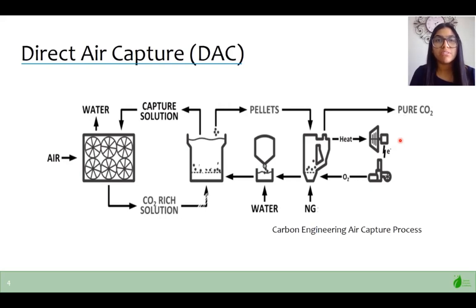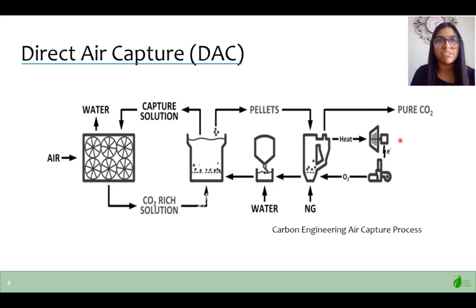This process is performed using the sorbent potassium hydroxide to perform a neutralization acid-base reaction to form potassium carbonate. Air is forced into the air contactor that contains the sorbent, where it captures up to 75% of the carbon dioxide. However, potassium carbonate isn't our final product, so several downstream processing steps have to take place to obtain a product stream of carbon dioxide. This involves converting the potassium carbonate into pellets and subjecting these pellets to extremely high temperatures, which force the carbon dioxide to be released.